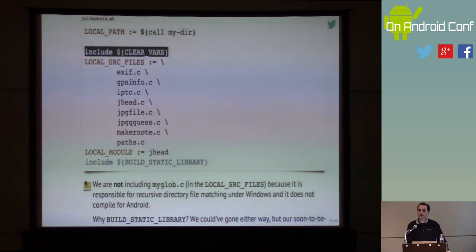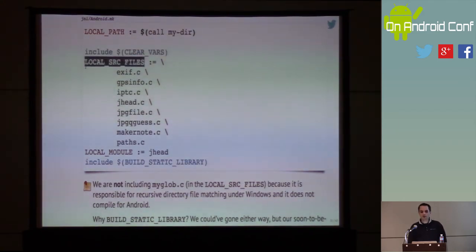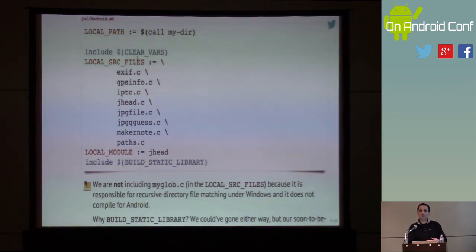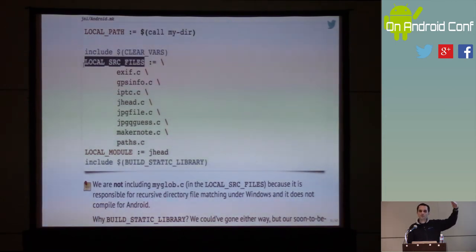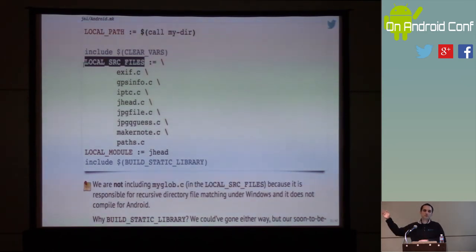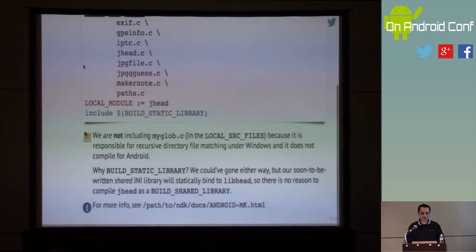CLEAR_VARS basically just means clear any variables that start with LOCAL_, except for LOCAL_PATH. It's not necessary here, but generally CLEAR_VARS is used when you have multiple build targets following one another. Because these are essentially global variables, you don't want a global variable from one target to affect the next target. CLEAR_VARS zeroes out the global variables.